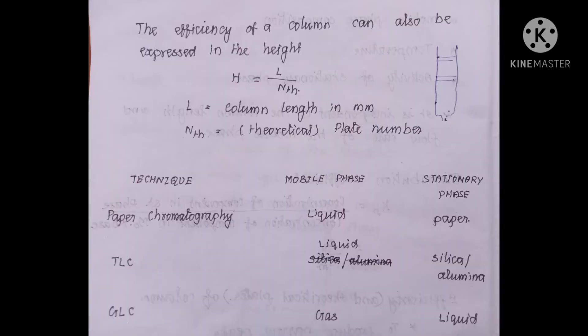The efficiency of the column is also expressed as H = L / N, where H is the height equivalent to a theoretical plate, L is the length of the column, and N is the number of theoretical plates. Increasing the column length makes the column more efficient.